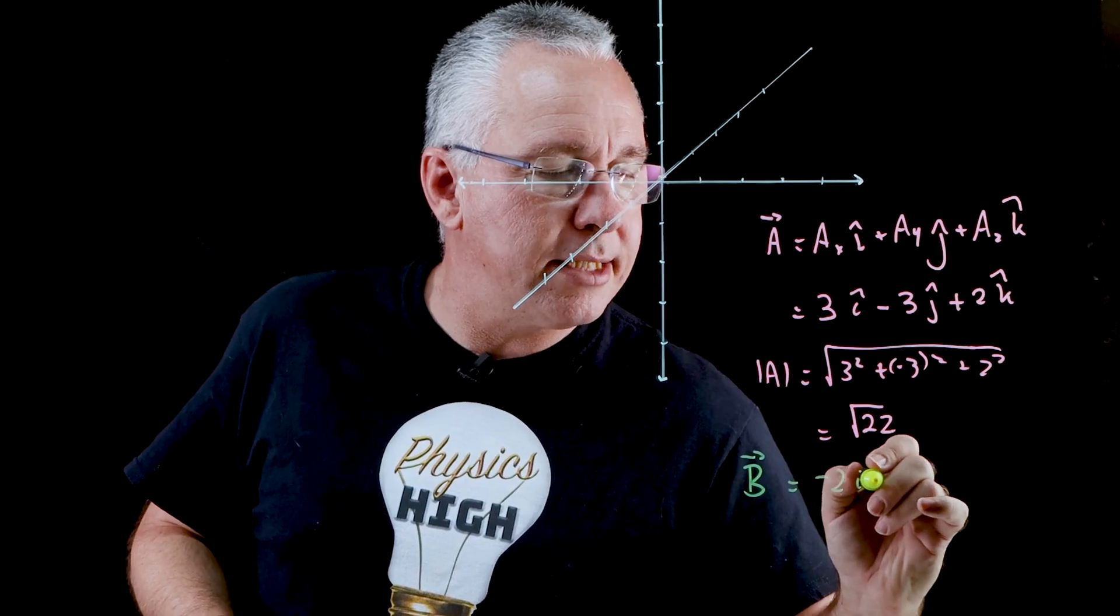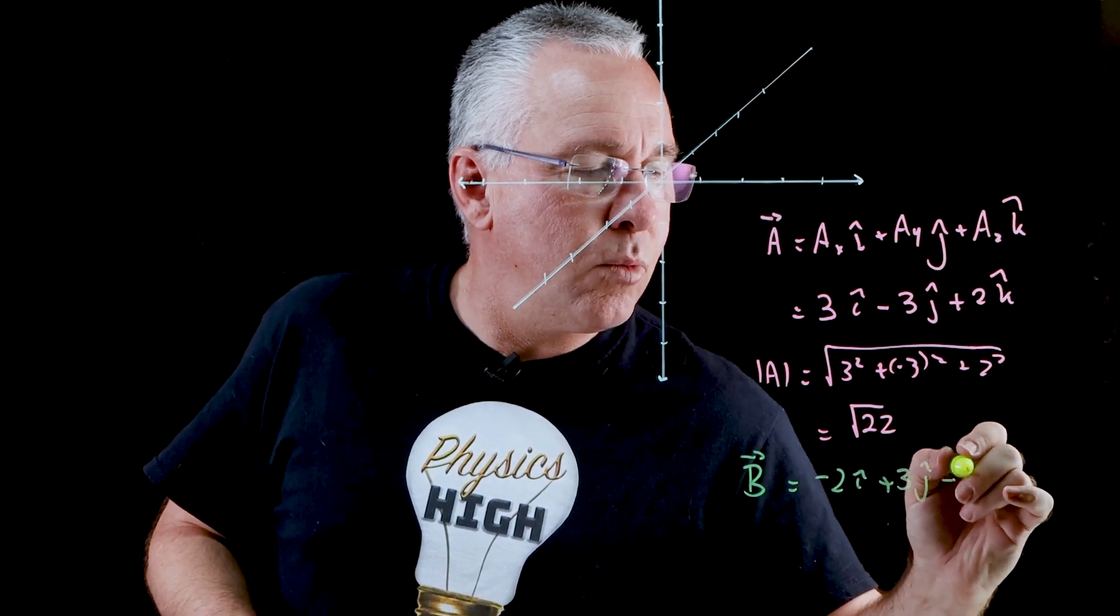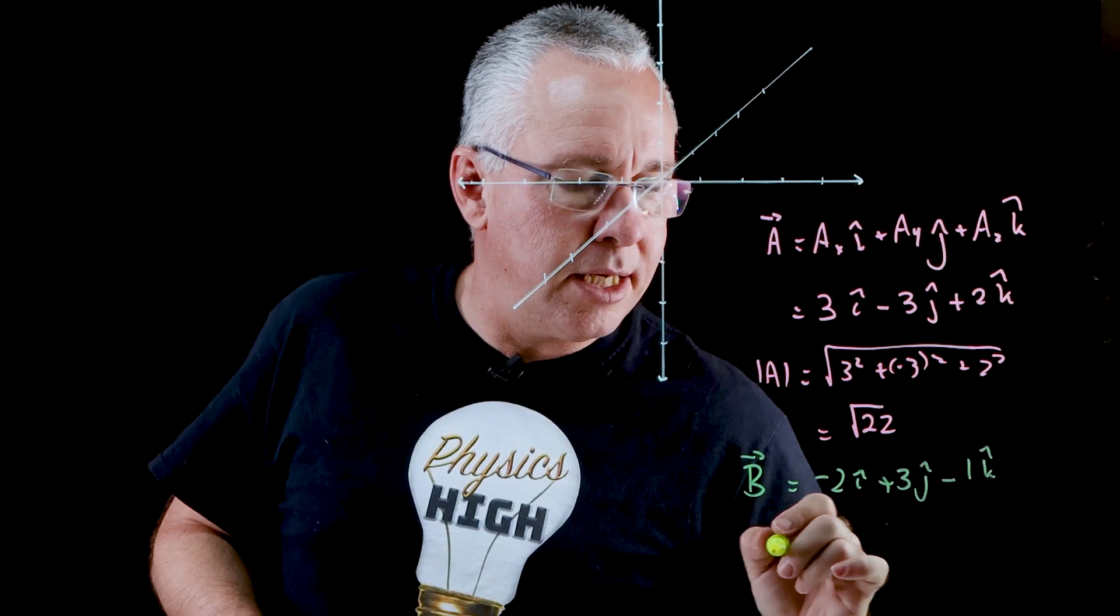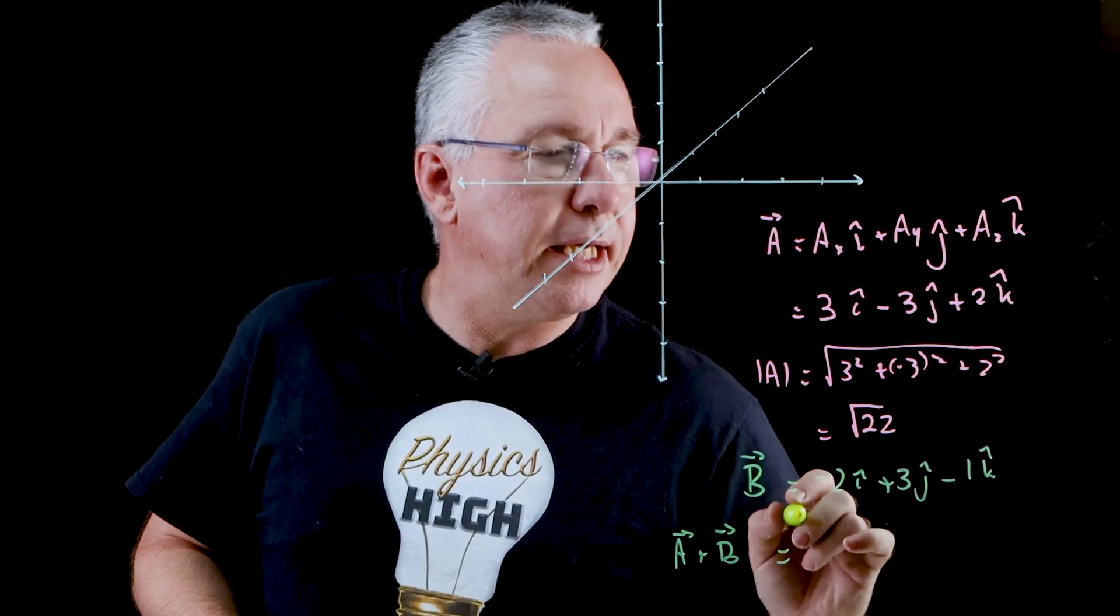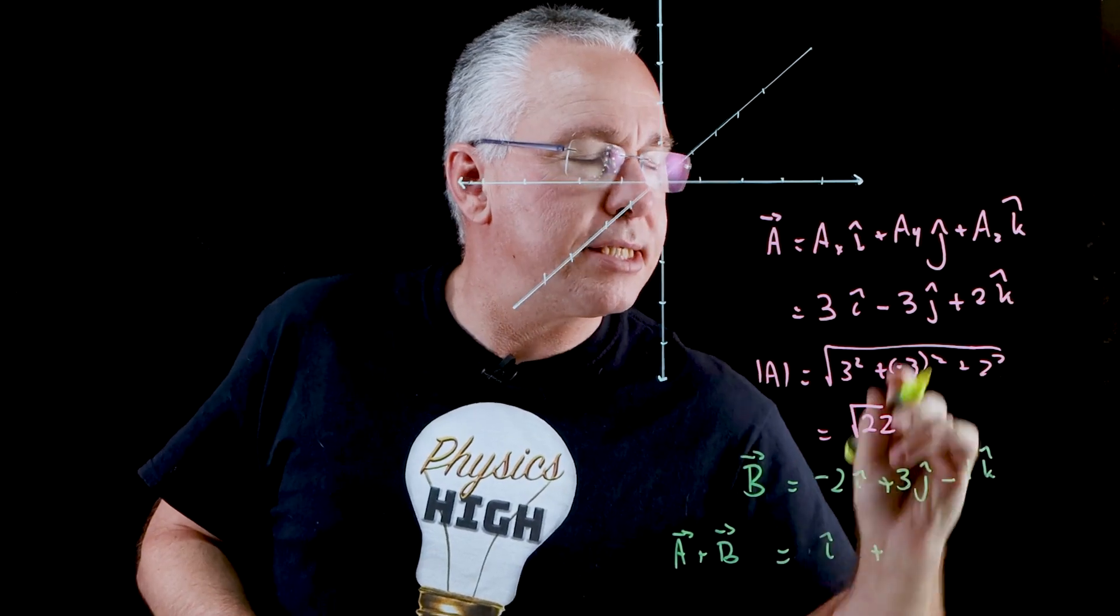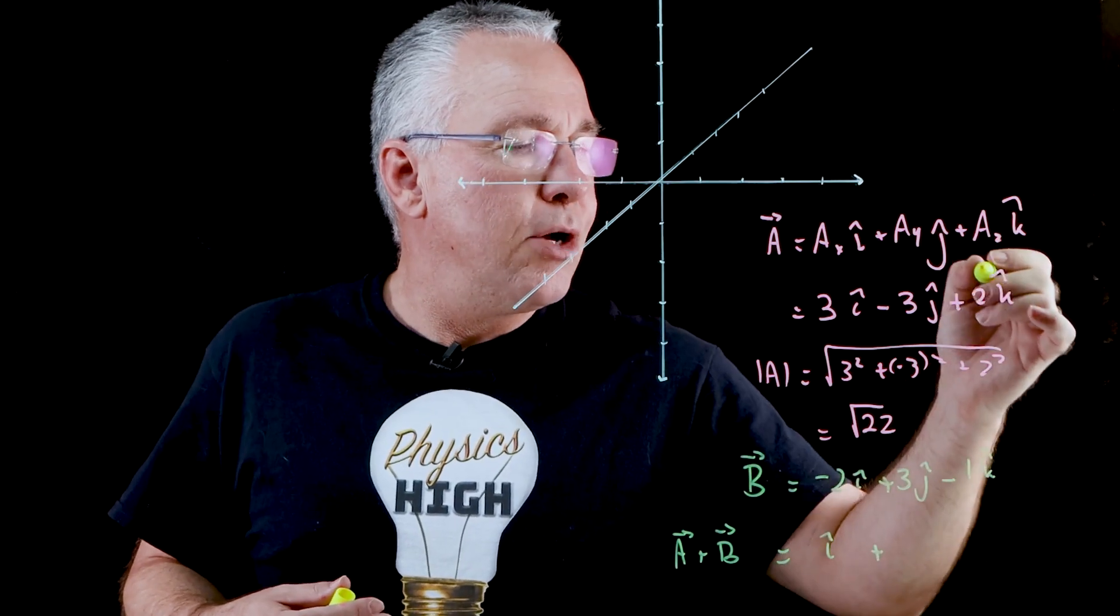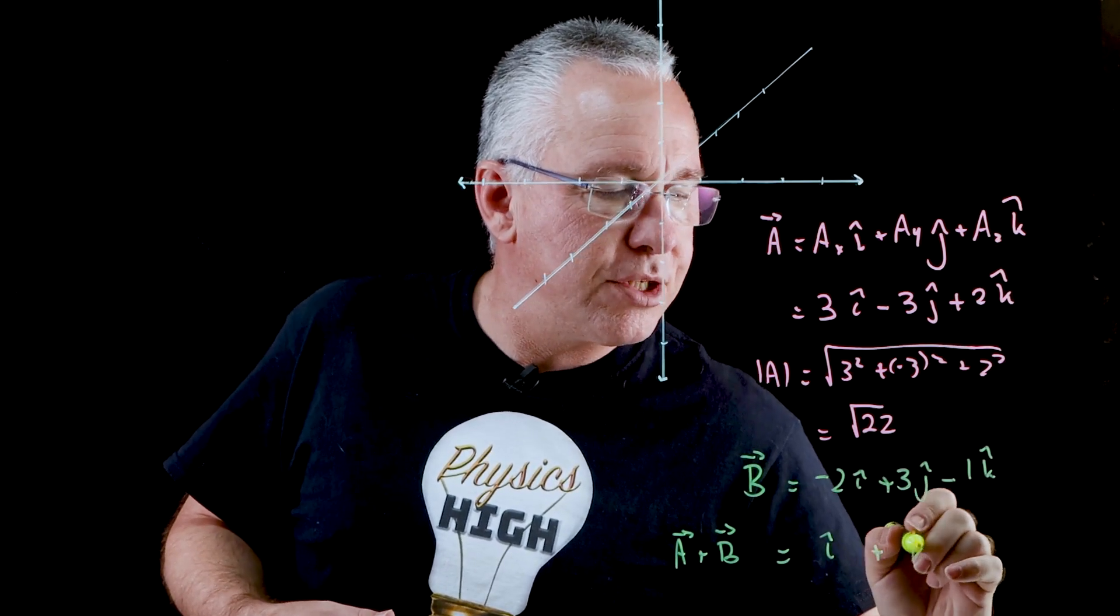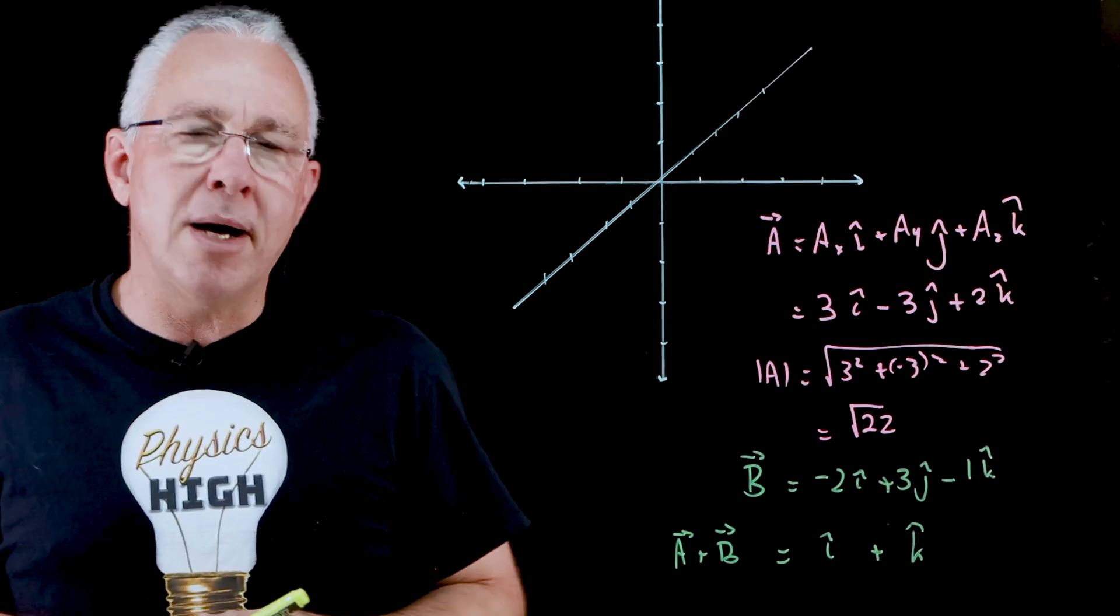So obviously if I have a vector b and that is equal to let's say negative two i hat plus three j hat minus one k hat, then a plus b is going to simply equal to i hat plus negative three plus three is no j hat, in this case we have two minus one and we just get k hat, and that is my final result for my a plus b.